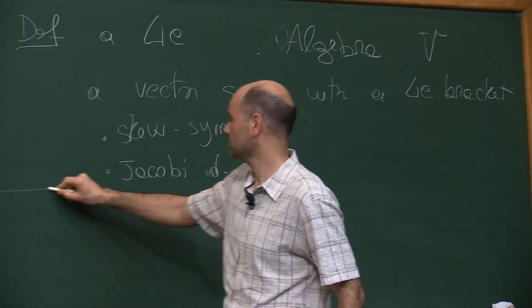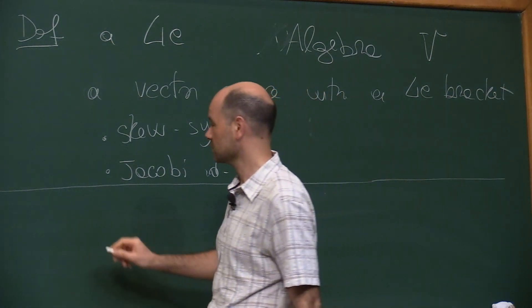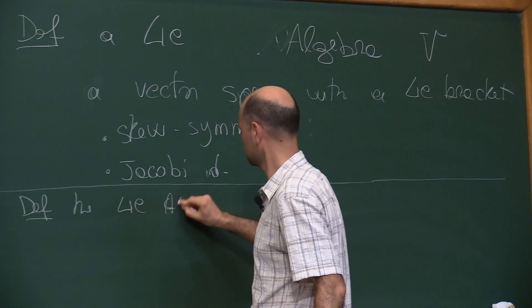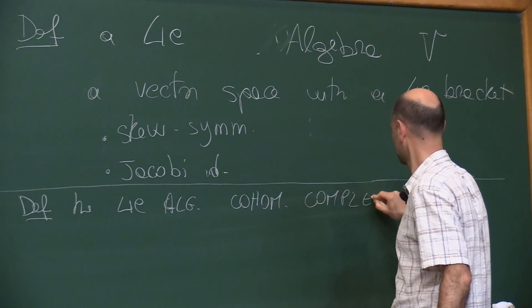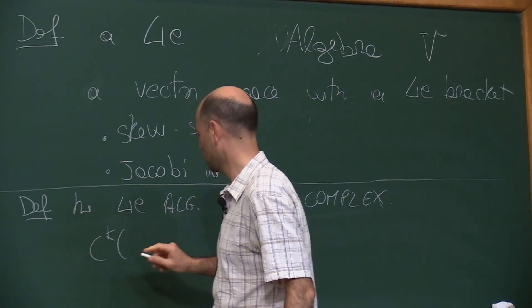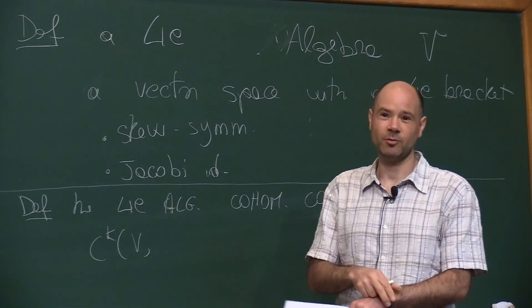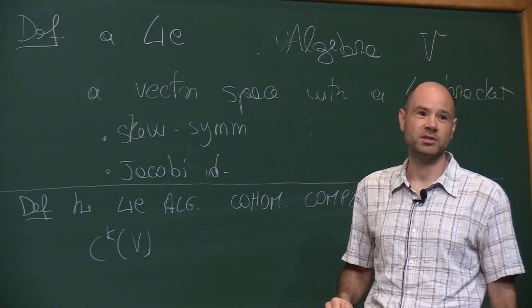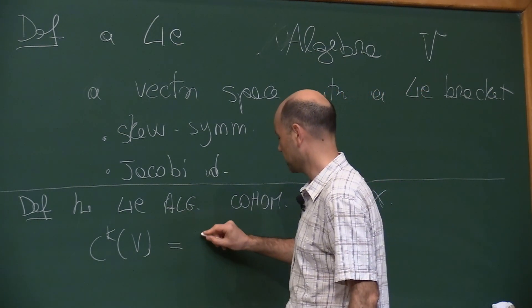A Lie algebra V is a vector space with a Lie bracket satisfying skew-symmetry and Jacobi identity. The notion of Lie algebra comes with the so-called Chevalley-Eilenberg cohomology complex. I will talk about cohomology with coefficients; for simplicity, in this talk I will only consider coefficients in the adjoint representation.